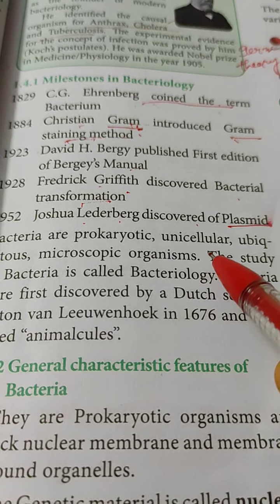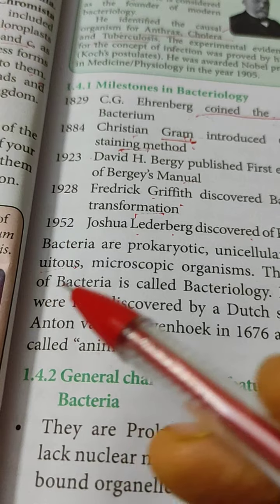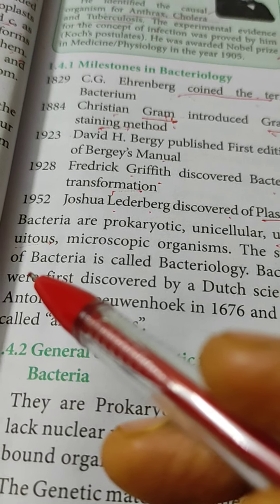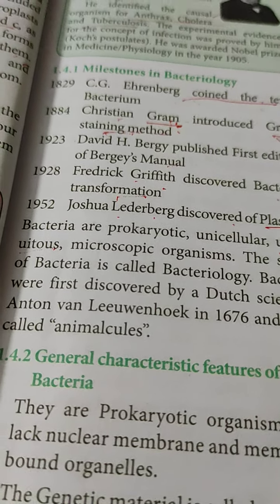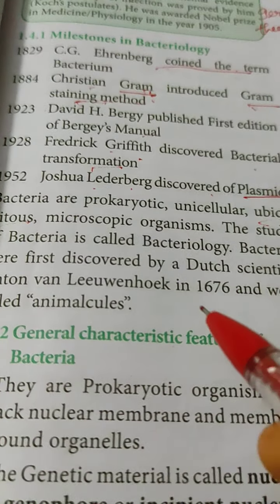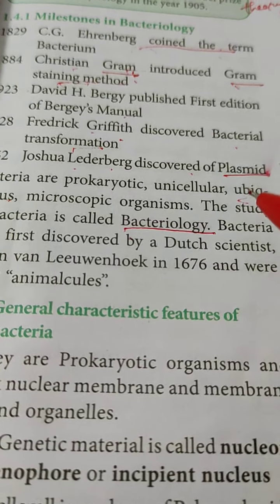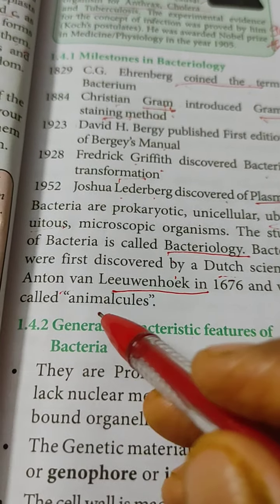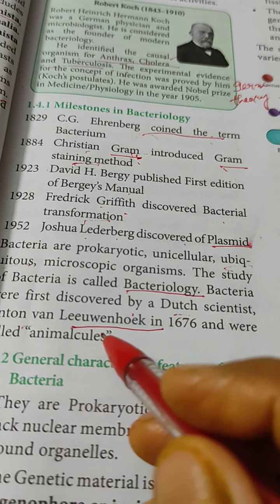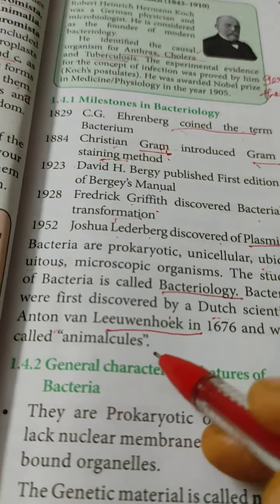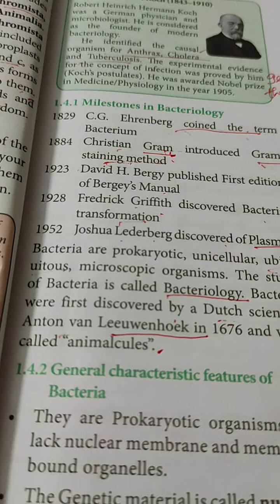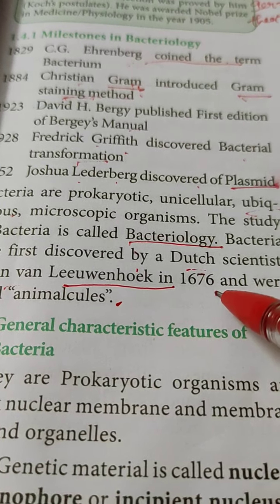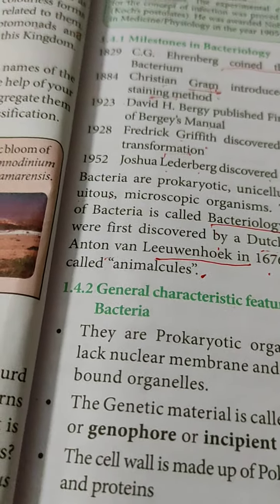Bacteria are prokaryotic, unicellular, and ubiquitous — found everywhere: in air, water, on land, and even in space. The study of bacteria is called bacteriology. Bacteria were first discovered by Dutch scientist Anton van Leeuwenhoek, who called them 'animalcules' — very minute animals. However, the term 'bacterium' was coined by Ehrenberg.